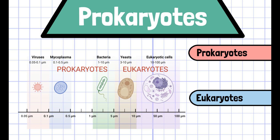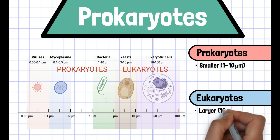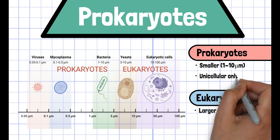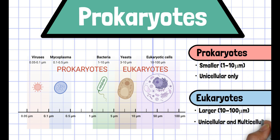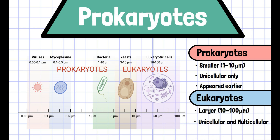Prokaryotes have a smaller size and much simpler structure compared to eukaryotes. The size of typical prokaryotes ranges from 1 to 10 micrometers, whereas eukaryotes range from 10 to 100 micrometers. All prokaryotes are unicellular, but eukaryotes can be either unicellular or multicellular. Prokaryotes are thought to have appeared earlier on the planet compared to eukaryotes.